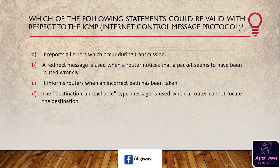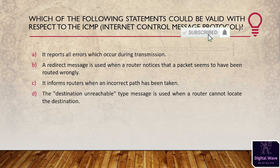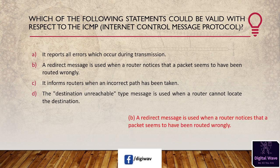Next question: which of the following statements could be valid with respect to ICMP (Internet Control Message Protocol)? Options include: it reports all errors during transmission; a redirect message is used when a router notices a packet has been routed wrongly; it informs routers when an incorrect path has been taken; the destination unreachable message is used when a router cannot locate the destination. The answer is B: a redirect message is used when a router notices that a packet seems to have been routed wrongly.